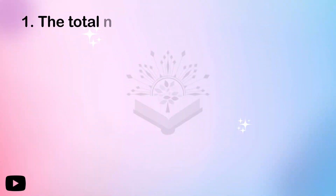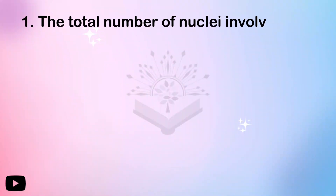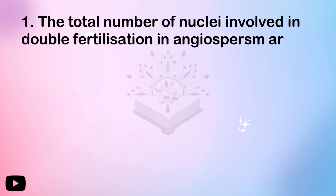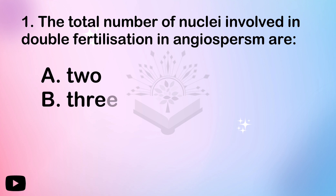The first question: the total number of nuclei involved in double fertilization in angiosperms are — that is the process of double fertilization in angiosperms, which I have already studied.